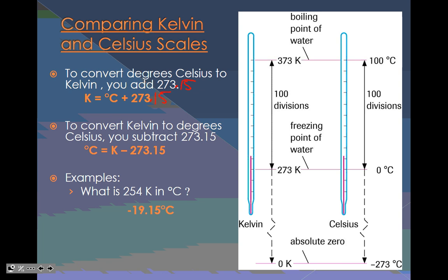Here's some examples where you are trying to go from Kelvin to Celsius and Celsius to Kelvin. What is 254 Kelvin in degrees Celsius? It's negative 19.15 degrees Celsius. What is negative 34 degrees Celsius in Kelvin? The answer is 239.15 Kelvin.